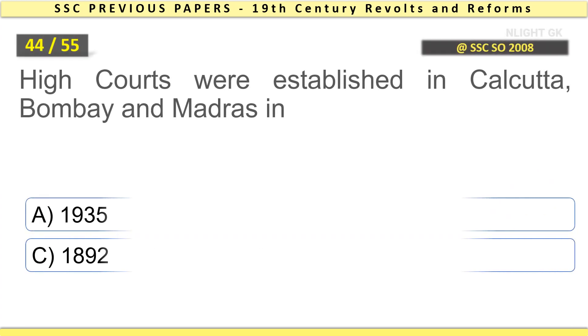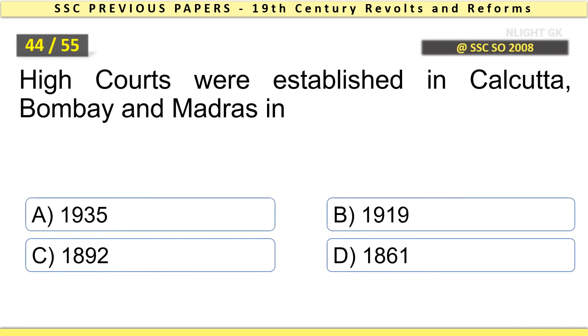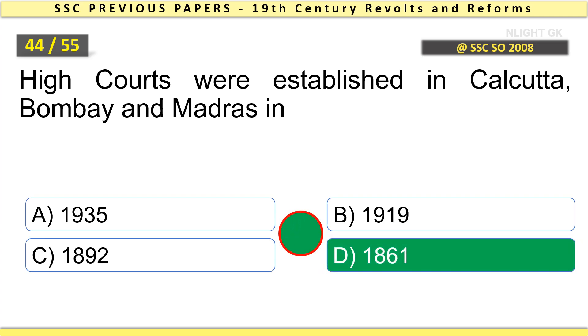High courts were established in Calcutta, Bombay, and Madras in which year? In 1861.